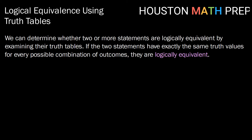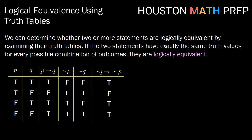Hey guys, welcome back — Houston Math Prep here. In this video, we're going to take a look at logical equivalence using truth tables. We can determine whether two or more statements are logically equivalent by examining their truth tables. If the two statements have exactly the same truth values — if their columns look the same for every possible combination of outcomes — then they are logically equivalent. We denote logical equivalence with the biconditional arrow as the connector.